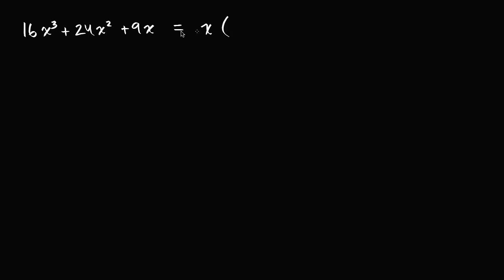So then this is going to be x times, when you factor out an x from 16x to the third, you're gonna be left with 16x squared and then plus 24x and then plus 9.